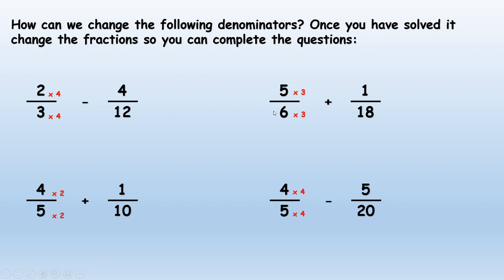Five times three will give us fifteen, and six times three will give us eighteen. So we'll have five over eighteen plus one over eighteen, which equals sixteen over eighteen.